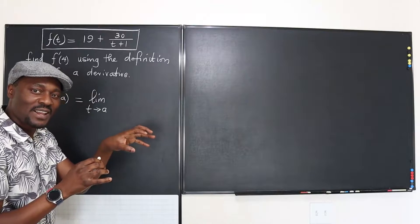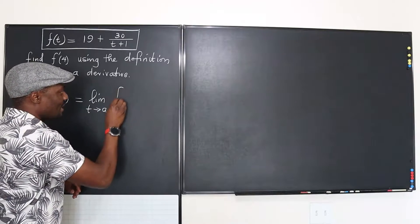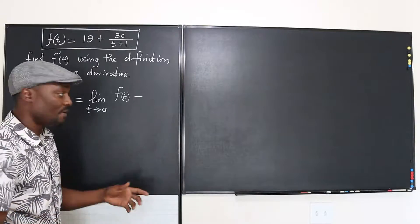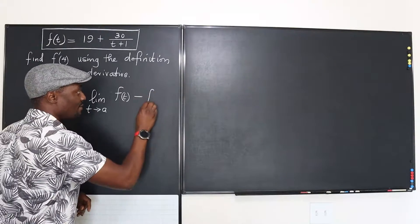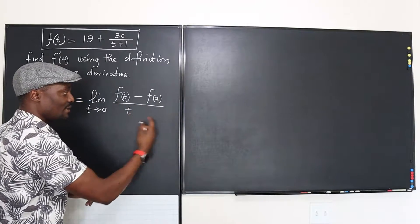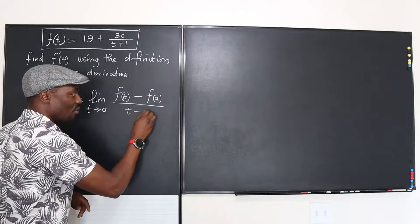What number would you get? Well, it will be basically the function minus the value of the function when you get to that point, which is f of a, divided by the difference, the distance between your t and that point a.